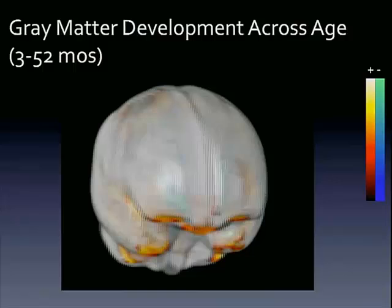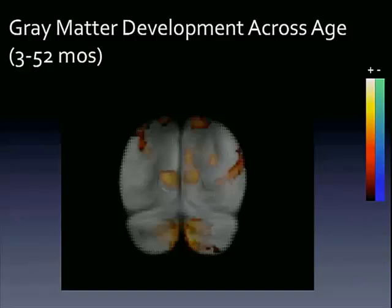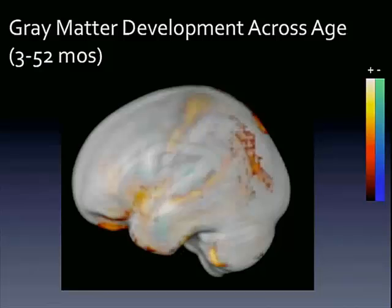Looking at this age group, we first looked at gray matter development across age. The difference with this very young group is that we're actually seeing gray matter increases, particularly in the parietal lobes, the orbital frontal poles, and the temporal poles. We are also seeing small bits of blue, which indicates negative correlation, meaning we're seeing gray matter decreases subcortically. The orange and reddish colors are associated with positive relationships, and blue/greenish with negative relationships.